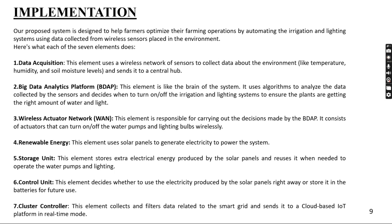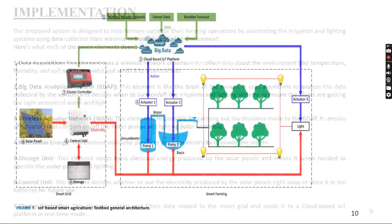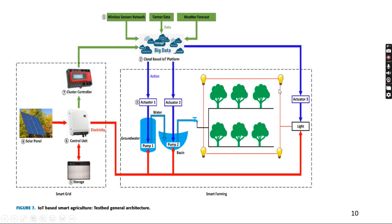Seventh, the cluster controller: this element collects and filters data related to the smart grid and sends it to a cloud-based IoT platform in real-time. In the general system diagram, the wireless sensor networks along with farmer data and weather data are stored in a big data platform. Actuators perform actions via the cloud-based IoT platform — actuating the water pumps, light bulbs, etc. — which are essential for the plants based on the data. The solar panels along with the control unit, cluster controller and storage are all used to power the motors, lights and actuators.